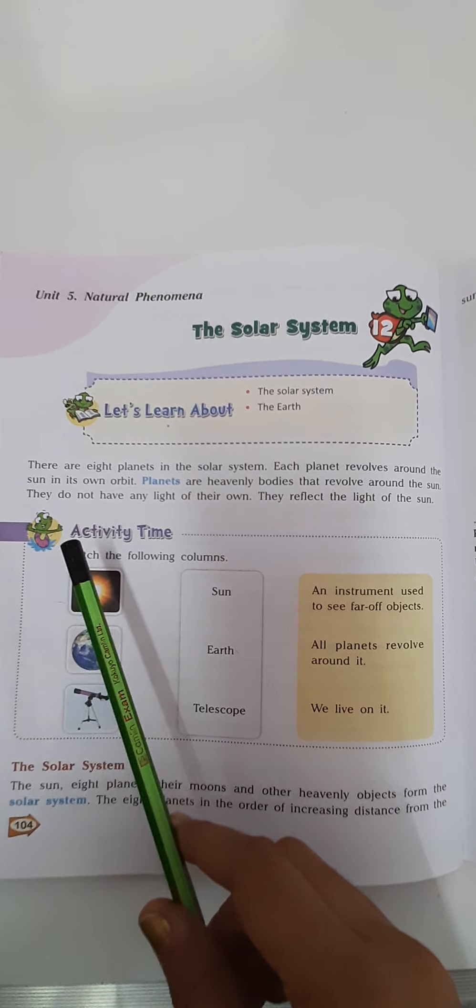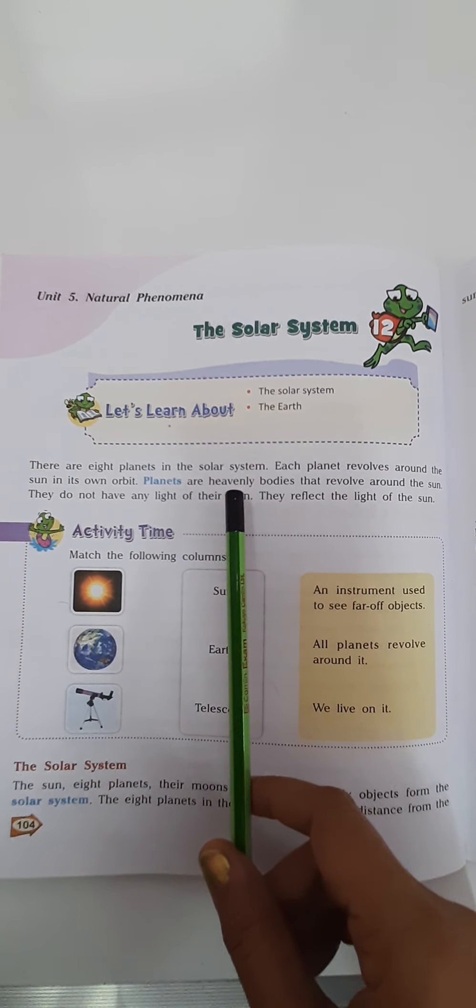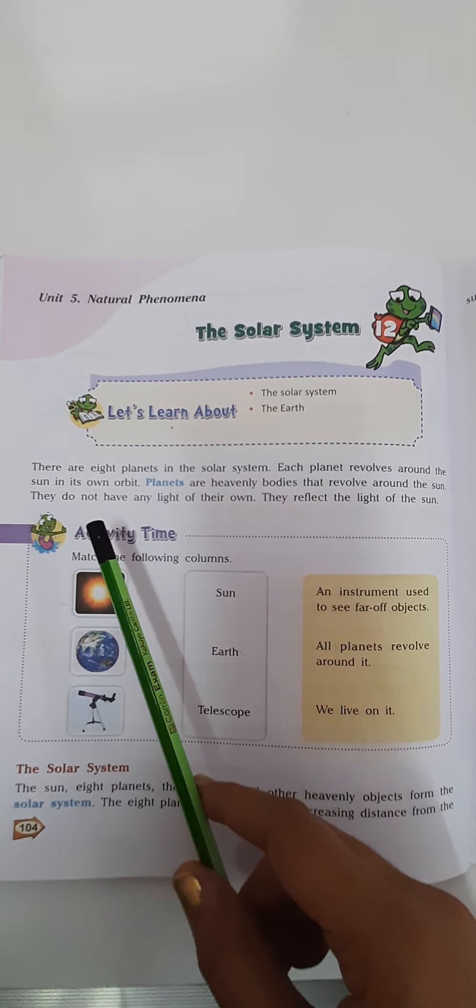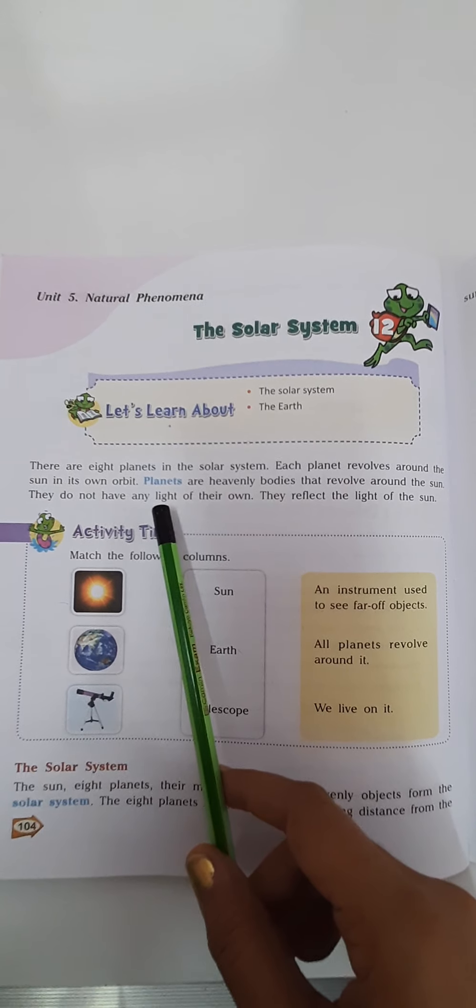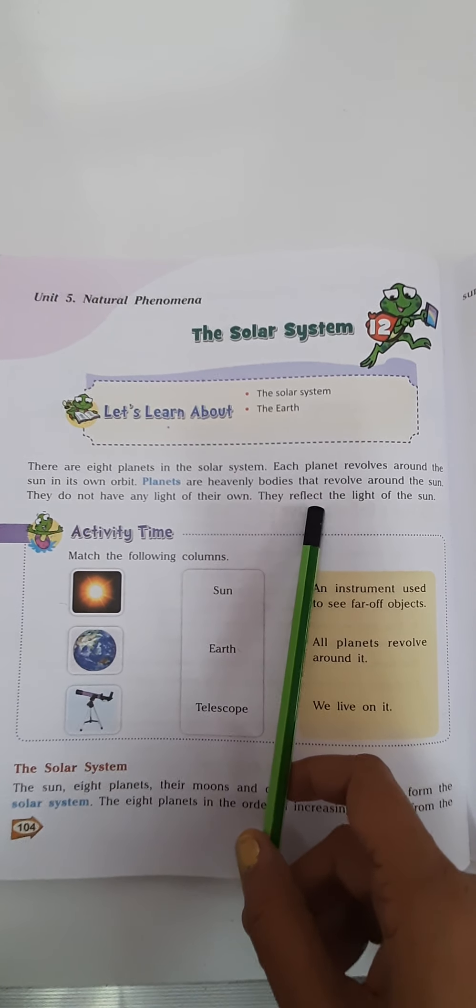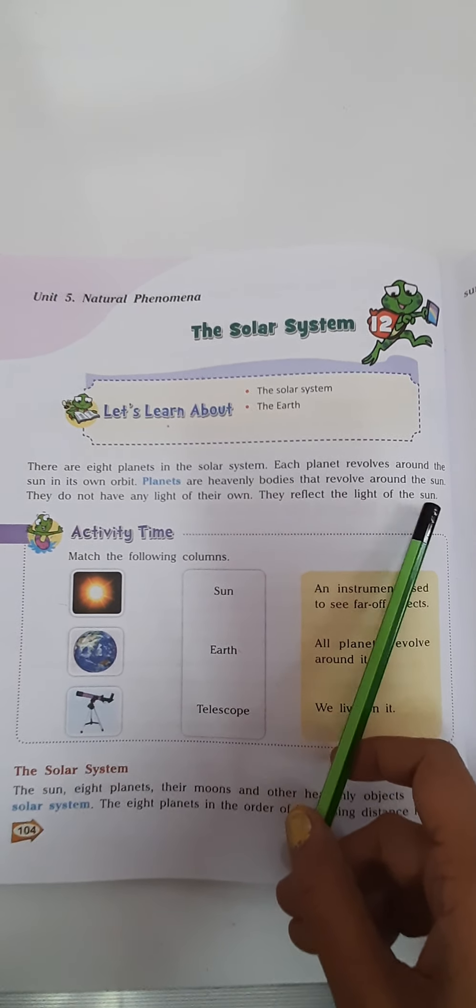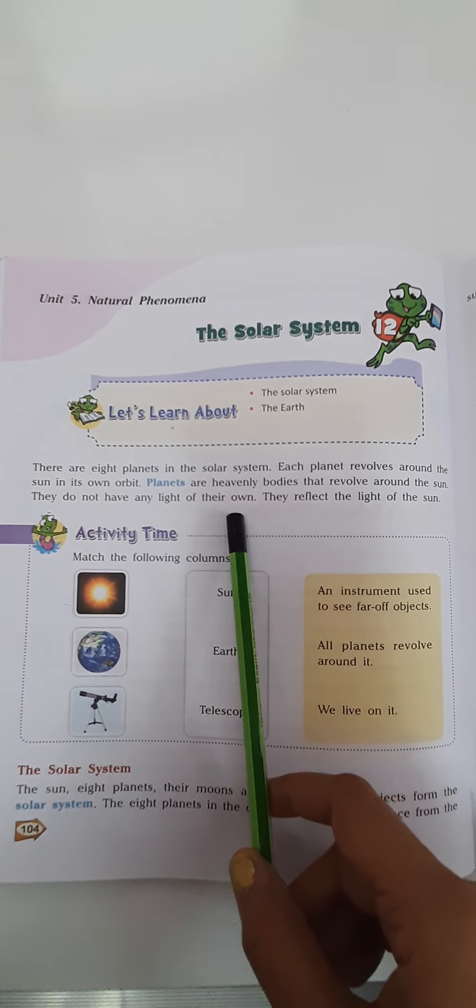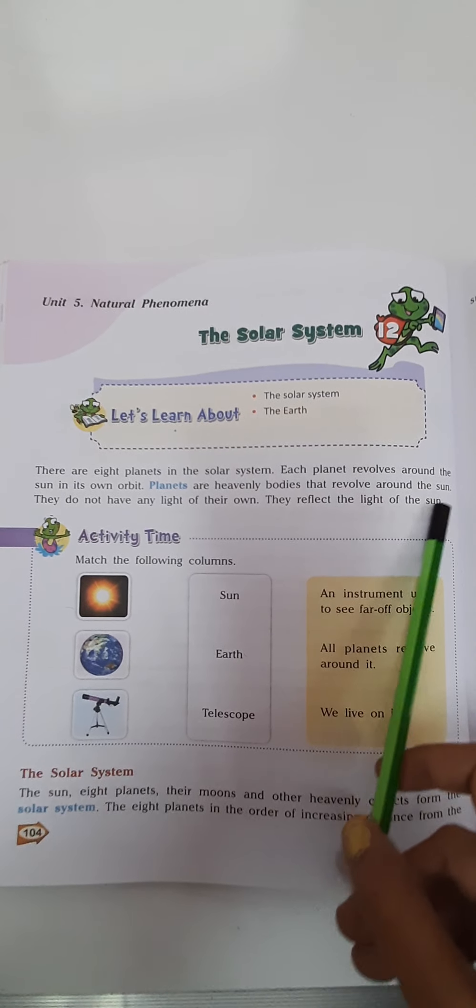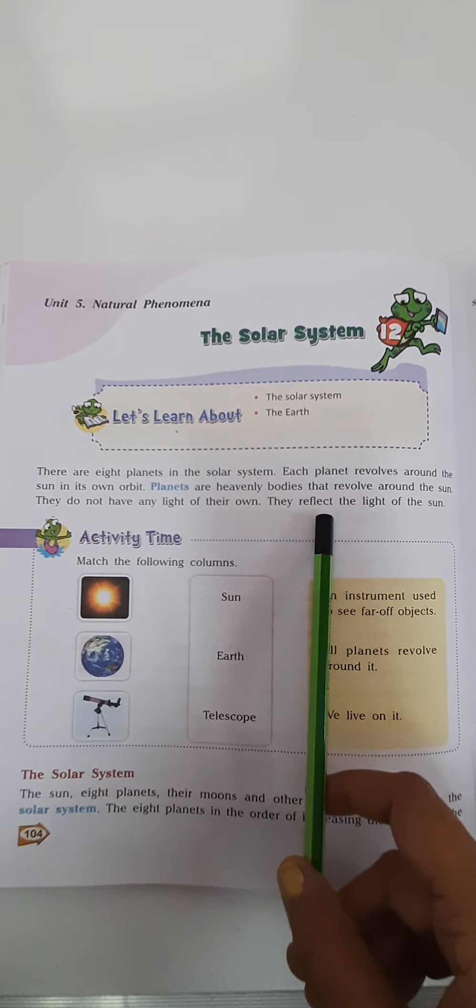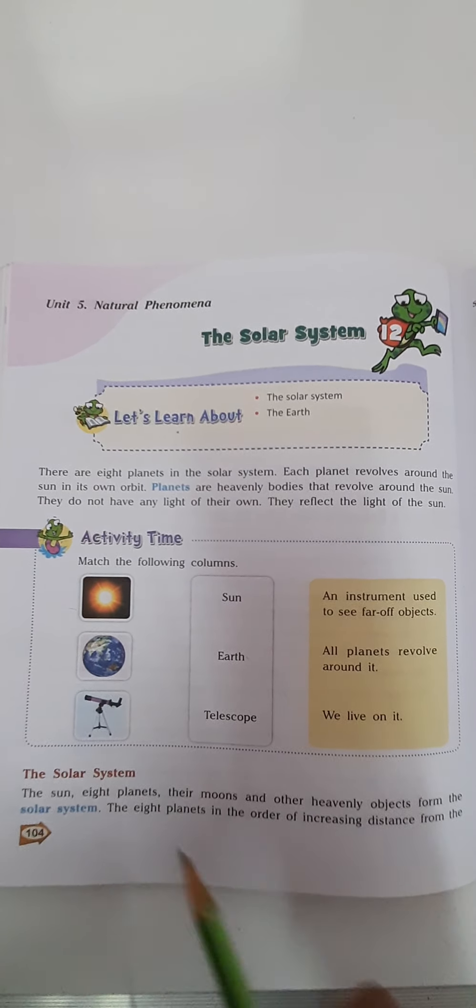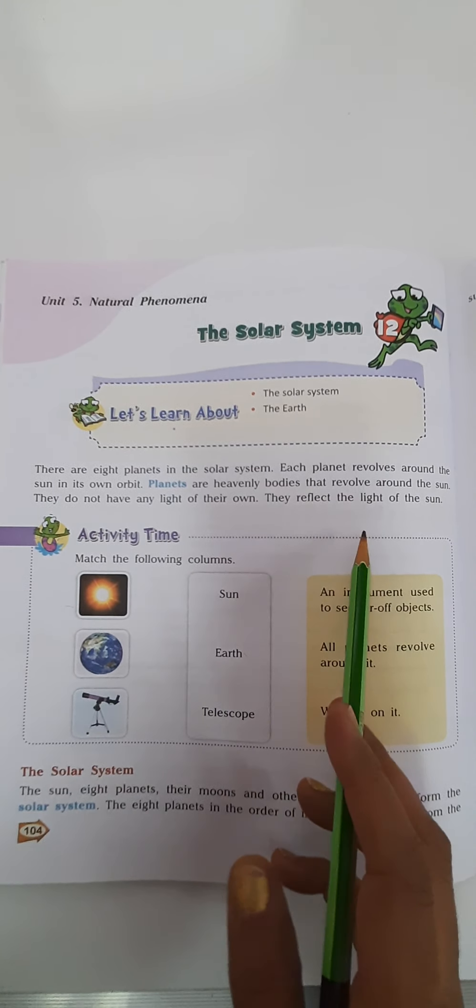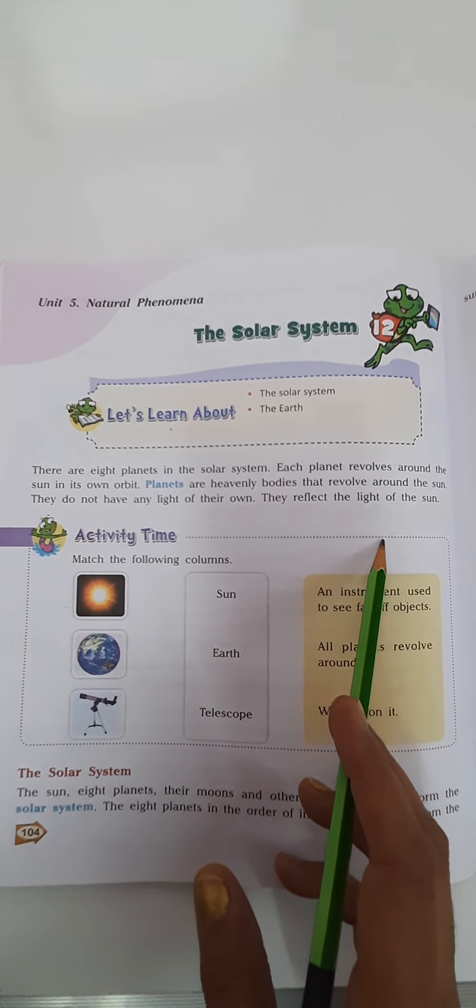So the first introduction is there are eight planets in the solar system. Each planet revolves around the sun in its own orbit. Planets are heavenly bodies that revolve around the sun. They do not have any light of their own. They reflect the light of the sun. So ultimately we can understand that the sun is the ultimate source of energy for all the planets present in the solar system.